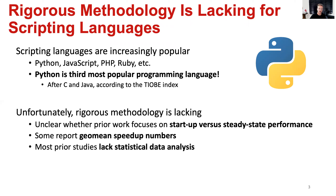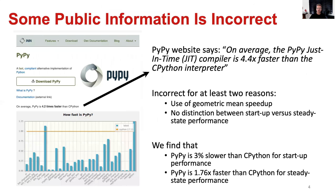Unfortunately, what we found is that rigorous methodology is lacking for scripting languages in general and Python workloads in particular. If we look at prior work, oftentimes it's unclear whether they are focusing on startup versus steady state performance. Several articles also use the geometric mean speedup to report average performance across workloads, and most prior work lacks statistical data analysis. This is particularly true if you look at the PyPy.org public website, which mentions that PyPy is 4.2 times faster than CPython. PyPy is the JIT compiler and CPython is the interpreter. We find this is incorrect for at least two reasons: they use the geometric mean speedup, and they make no distinction between startup versus steady state performance.